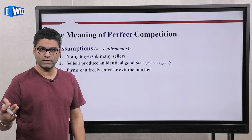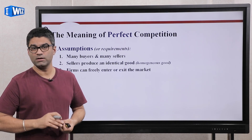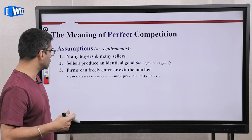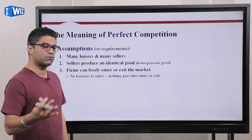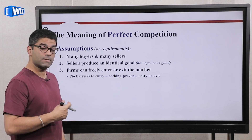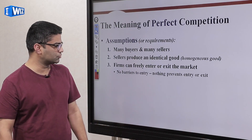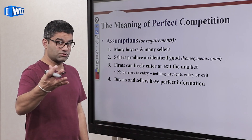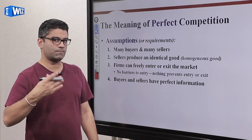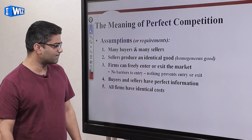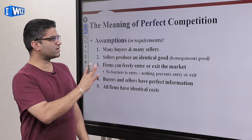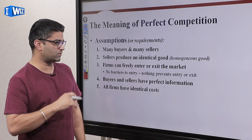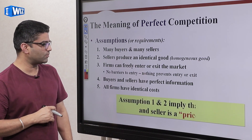The first two assumptions have a very important implication which you'll see in just a second. Third, firms can enter or exit the market freely. If you have a successful bakery, a competitor can open another bakery in your locality — there are no barriers to entry or exit. Fourth, buyers and sellers have perfect information — they know what bakeries to buy from, what products are available, and what the prices are. Fifth, all firms have identical costs. These assumptions must be met for a market to be perfectly competitive.